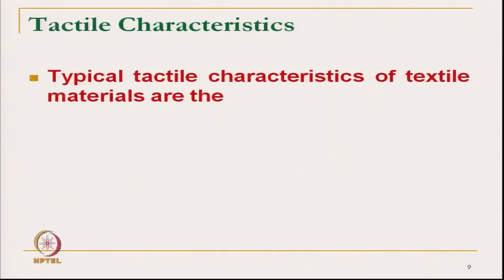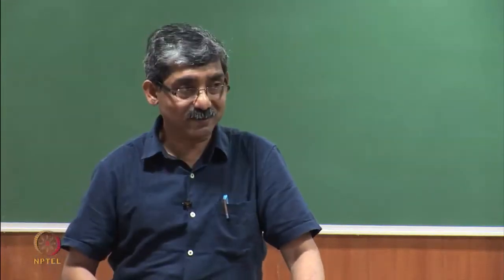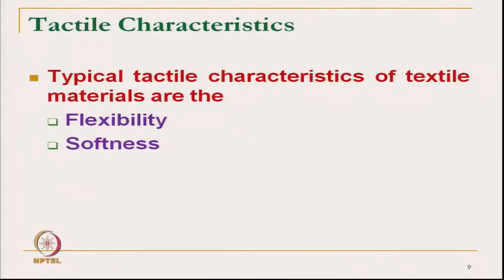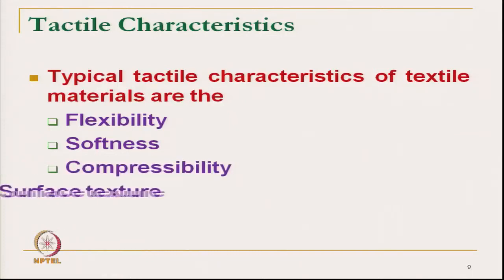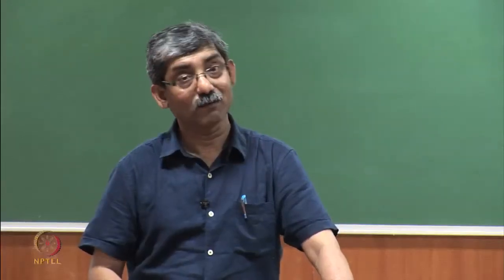The tactile characteristics of textile materials are typically: flexibility of the material — whether the fabric is flexible or stiff — which gives a tactile sensation; whether a fabric is soft or hard; whether it is compressible or not; whether it has a rough or smooth surface texture; whether the fabric is extensible or not. If it is extensible, it will exert less pressure on our body, giving a direct tactile sensation.